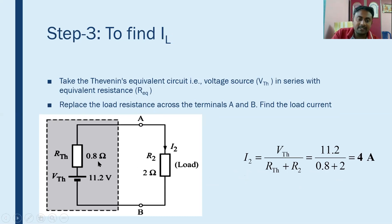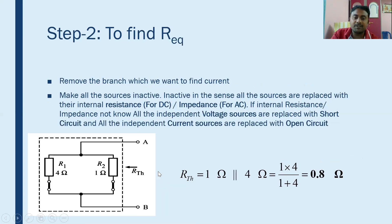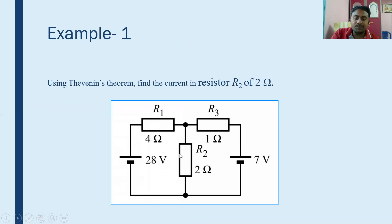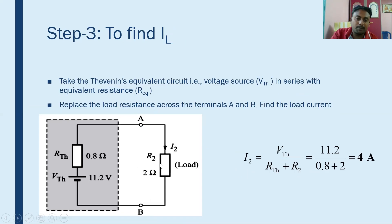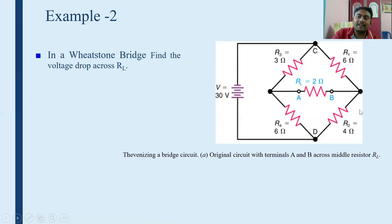So we find out VTH and R_equivalent — this is the Thevenin equivalent circuit. VTH is the Thevenin voltage and Rth is the Thevenin resistance. Now replacing the branch — the 2 ohm resistor — across the Thevenin equivalent circuit, we apply the formula IL = VTH / (Rth + R2). Substituting the values of VTH, Rth, and R2, we get the load current IL as 4 amperes.